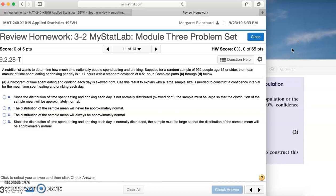Module 3, problem number 11. A nutritionist wants to determine how much time nationally people spend eating and drinking. Suppose for a random sample of 952 people age 15 or older, the mean amount of time spent eating or drinking per day is 1.17 hours with a standard deviation of 0.51 hours. Complete parts A through D below.